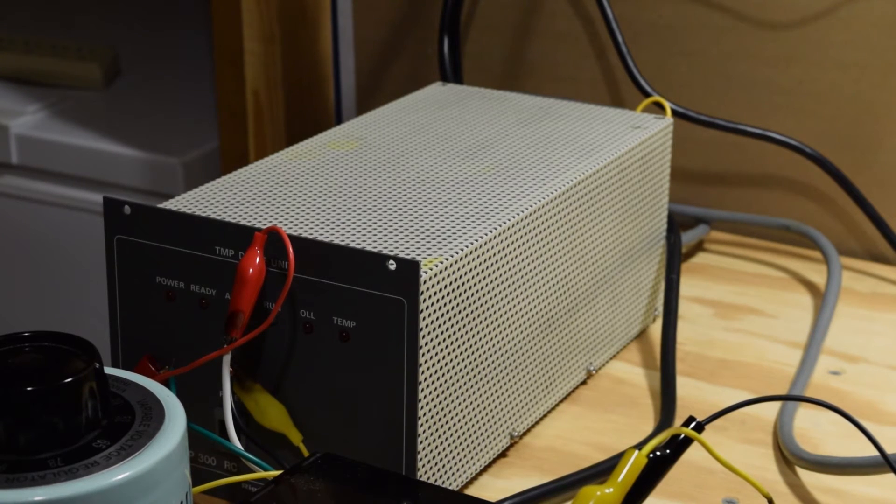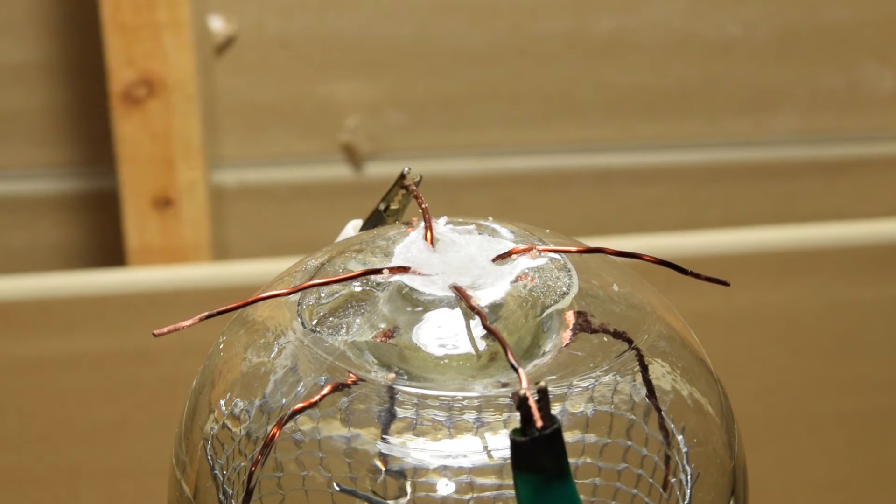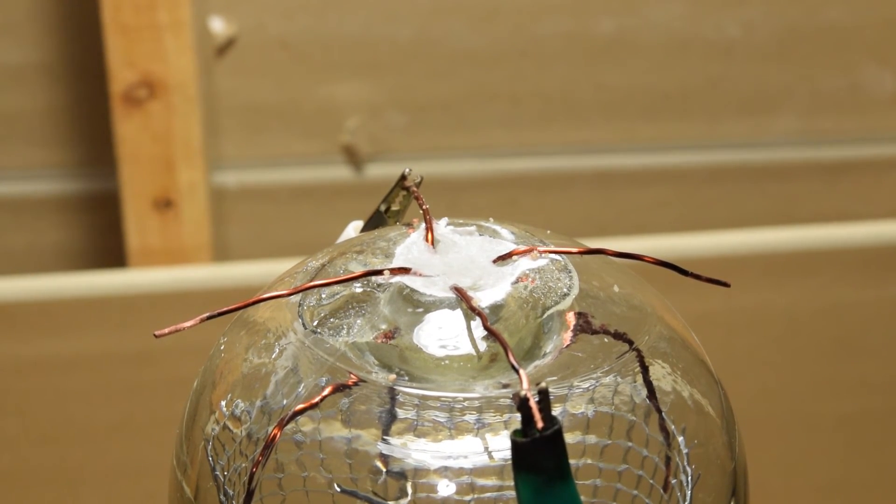Over here, we have the turbomolecular pump drive unit. This is what actually powers the turbopump. On top of the bell jar, I have four electrical feedthroughs. This bell jar originally had a hole in the top. I sealed it with epoxy and added four 12 gauge copper wire feedthroughs so I can feed electricity into the vacuum chamber.